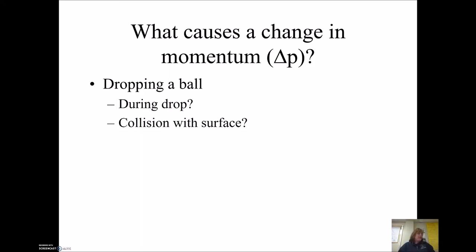What causes a change in momentum? So I have a little ball here, and when I drop it, as it falls it gains speed, so it's gaining momentum. The mass didn't change, but it's gaining speed, so it's gaining momentum. And then it collides with the surface and it bounces back up, which means its direction of velocity changed, so its momentum changed again.